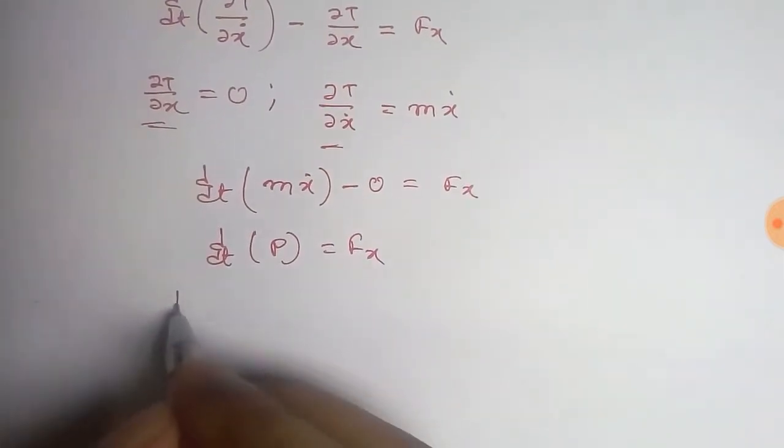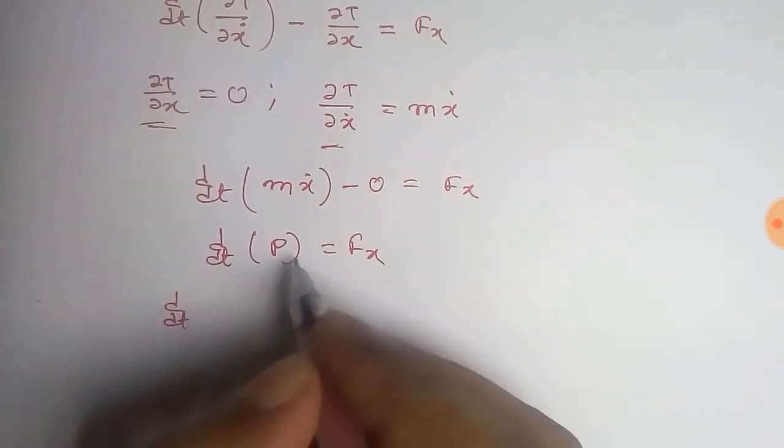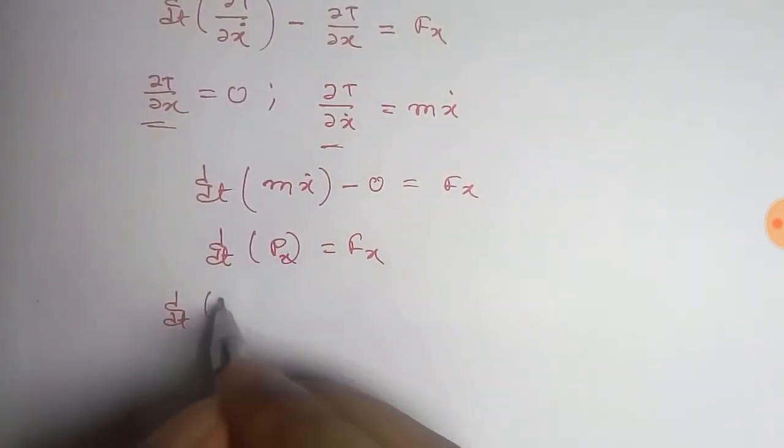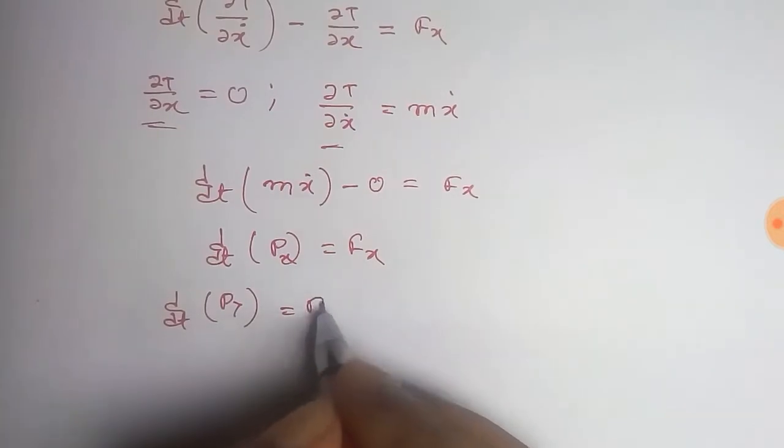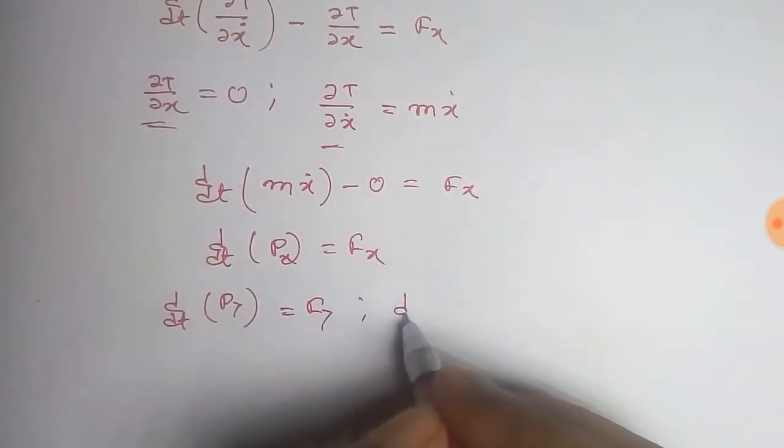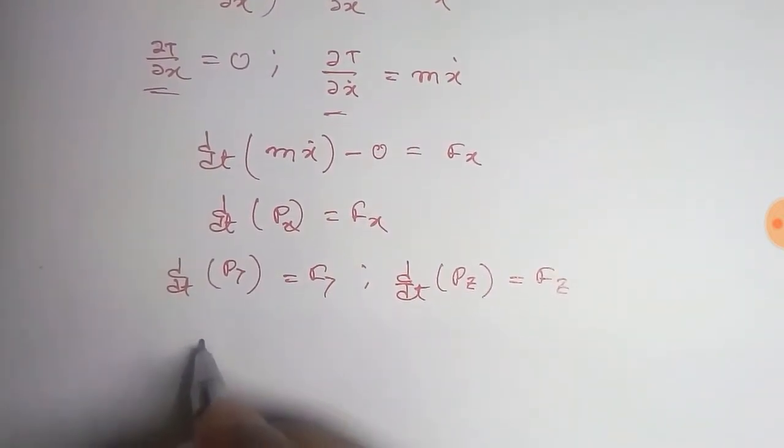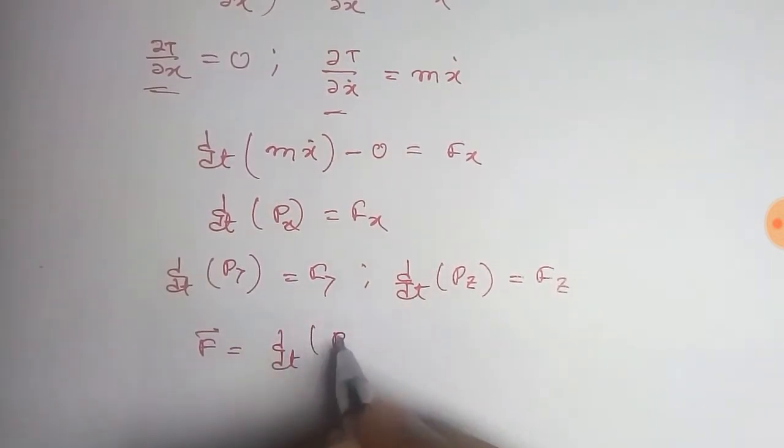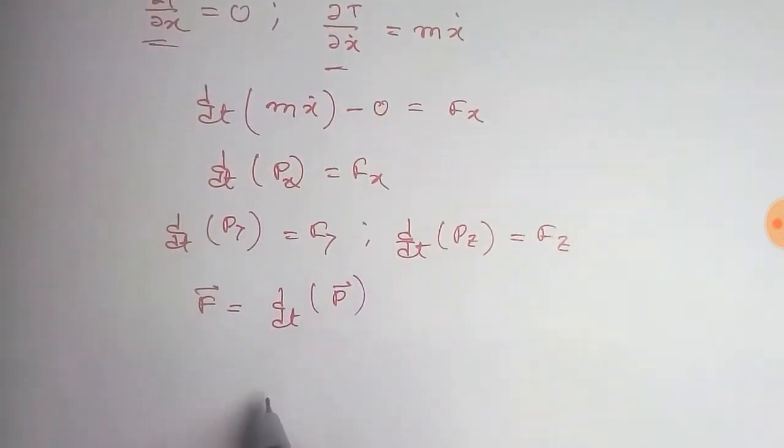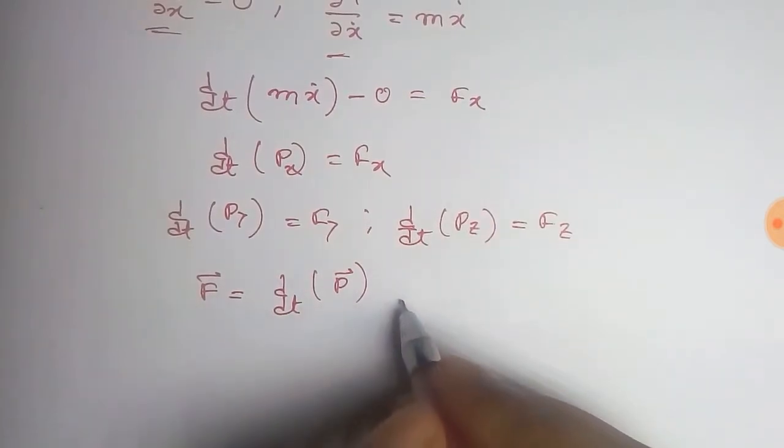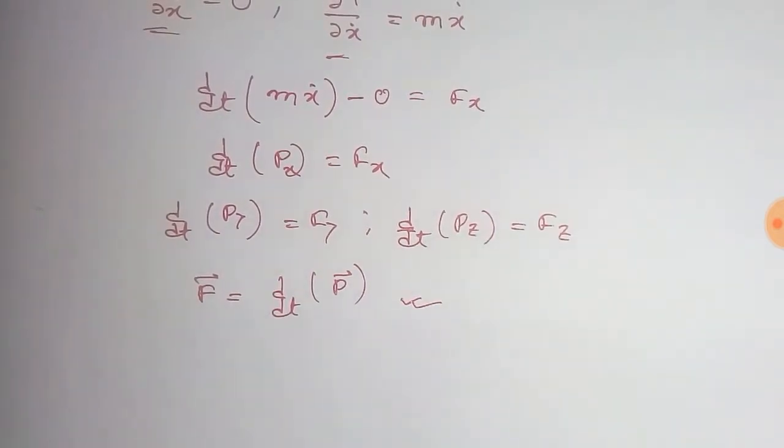For the y coordinate, d/dt of py equals Fy, and for the z coordinate, d/dt of pz equals Fz. Thus we get that F vector equals d/dt of p vector, and this is Newton's equation of motion that we obtained from Lagrange's equation.